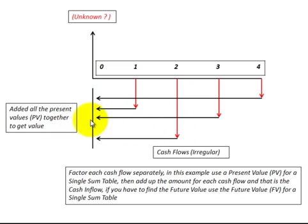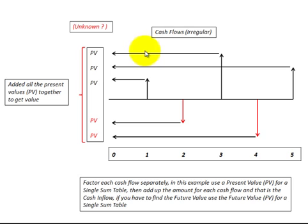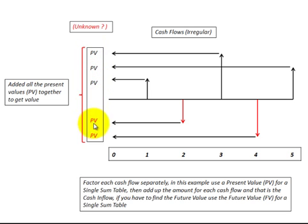Here we're looking at an unknown present value with irregular cash flow amounts at different time frames. You discount each one back separately using the present value formula, then add the values together to get your present value. If you have irregular cash flows on both the positive and negative side, you discount each group back separately, then add the positive present values and subtract the negative ones to get the net present value.